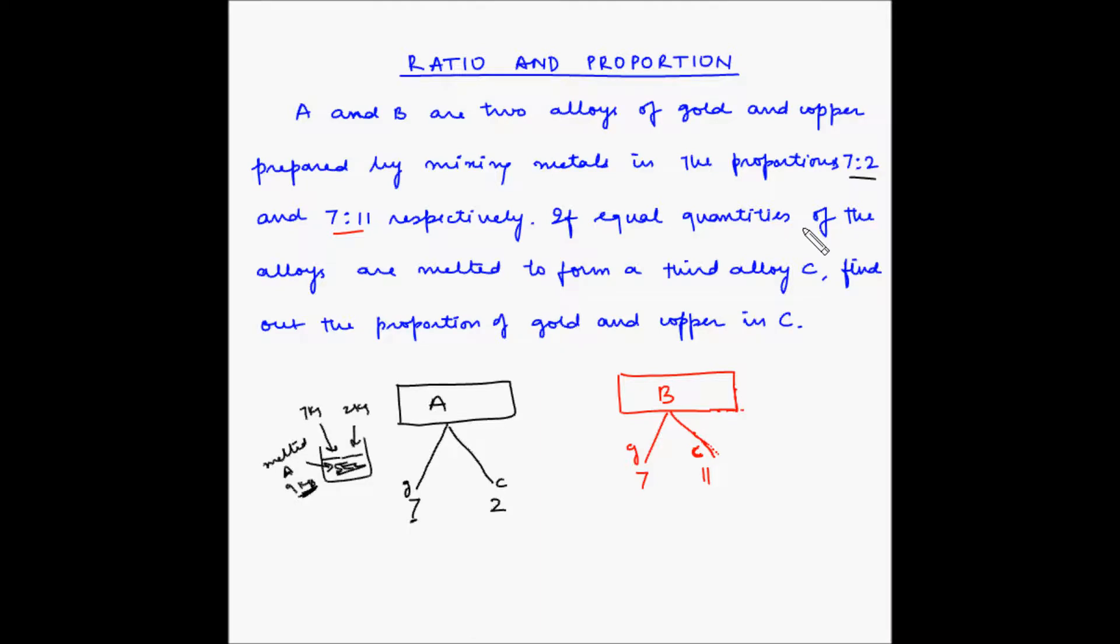If equal quantities of the alloys are melted to form a third alloy C, let us say this part of A is taken and this part of B is taken and we make another alloy called C. This has half of A and half of B. Find out the proportion of gold and copper in C.